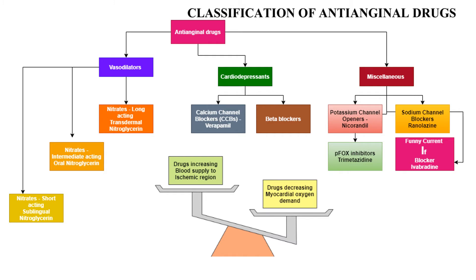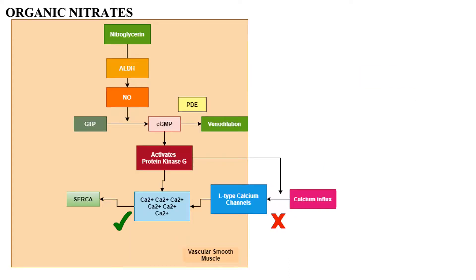Other categories of drugs include potassium channel openers like nicorandil, sodium channel openers, partial fatty acid oxidation inhibitors, and a newer drug which is a funny current inhibitor — ivabradine. Now let us see how organic nitrates work, using nitroglycerin as an example.